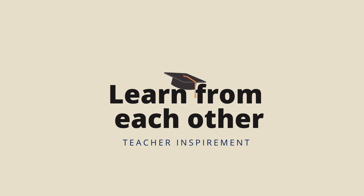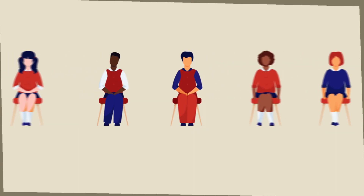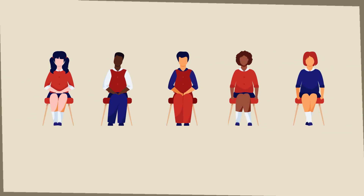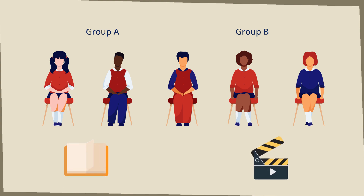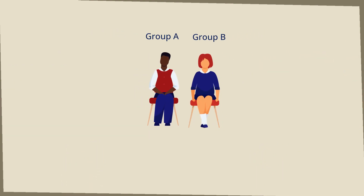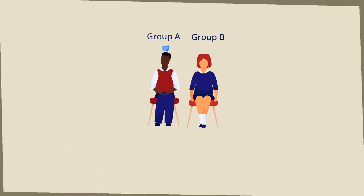The class is divided into two groups: Group A and Group B. Group A gets to read a text, and Group B gets to see a video about the same subject. After a few minutes, the teacher forms duos with one student from Group A and one from Group B. Student A explains the text they read to Student B, and Student B tells Student A about the video they've seen.